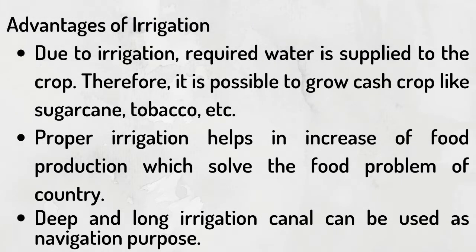Due to irrigation, required water is supplied to the crop, therefore it is possible to grow cash crops like sugarcane, tobacco, etc. Proper irrigation helps in the increase of food production without the food problem of the country. Deep and long irrigation canals can be used for navigation purposes.